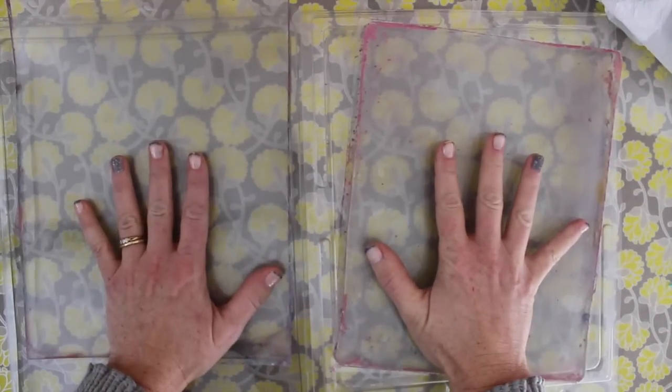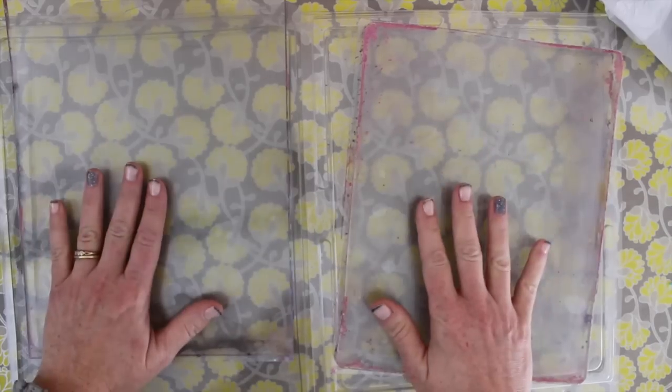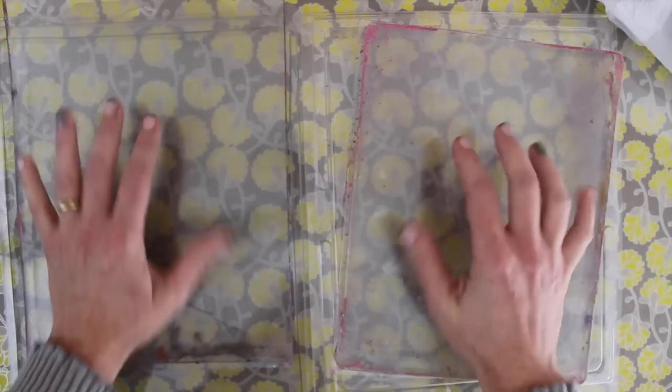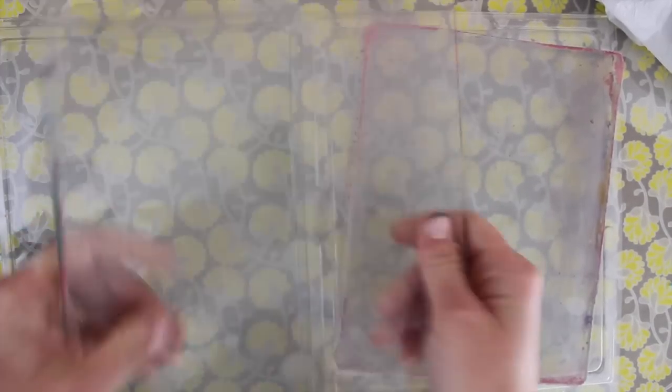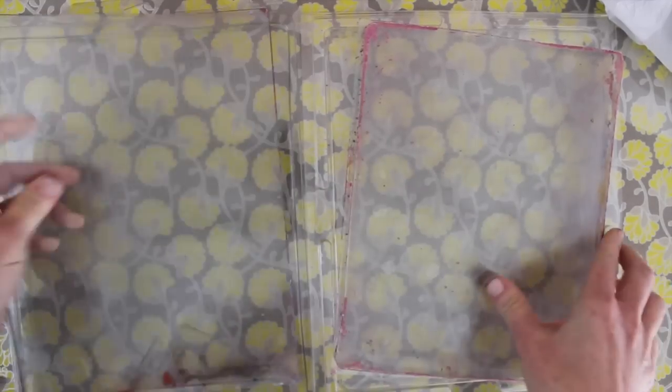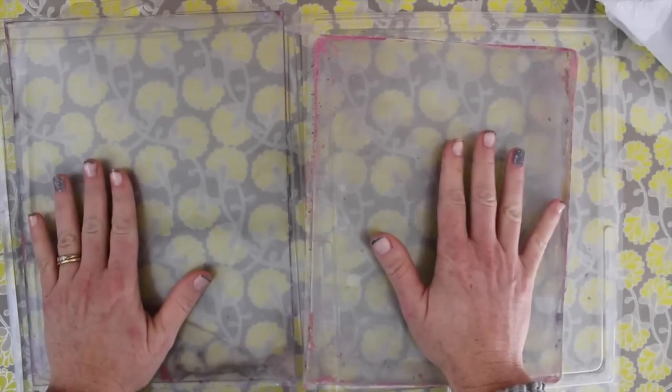Alright I have played with these for about three hours now and I have some information before we go into the side-by-side demo. First of all I've taken the plastic off and before I was worried about the flexibility. Well this is actually very flexible. It's just so much thinner that it has a different feel. So this is the Stampendous one. This is the Gelli Arts one.